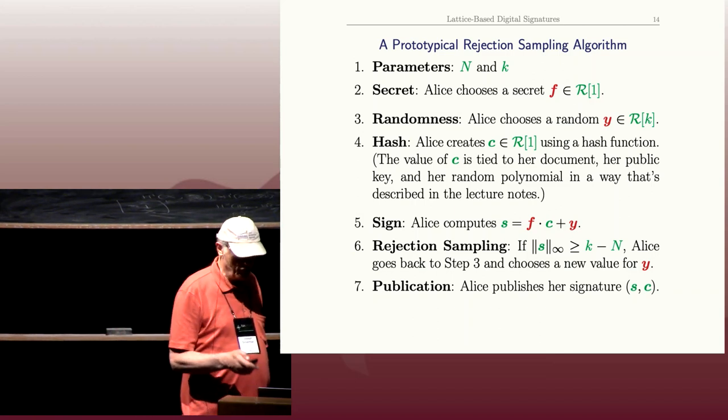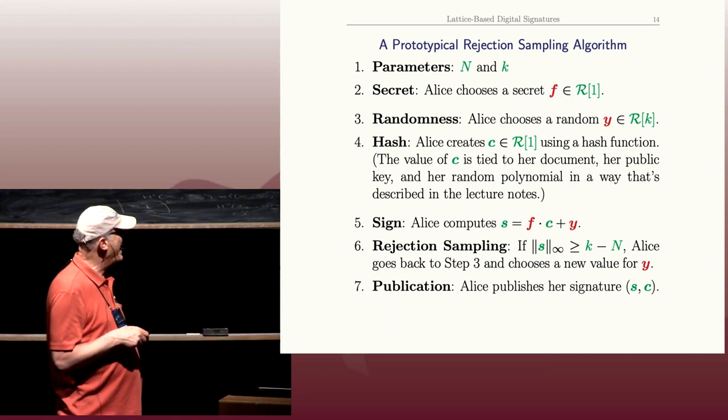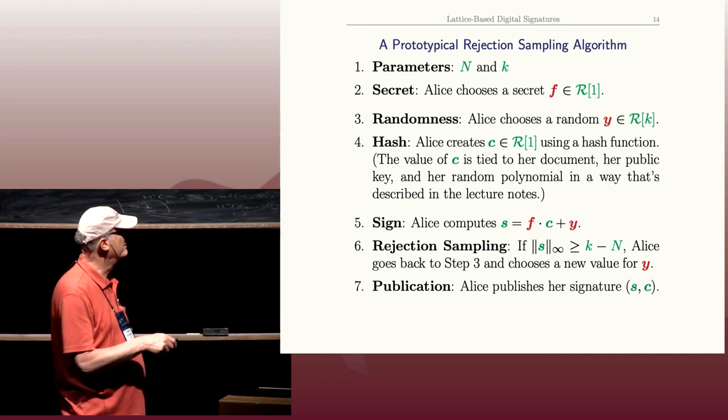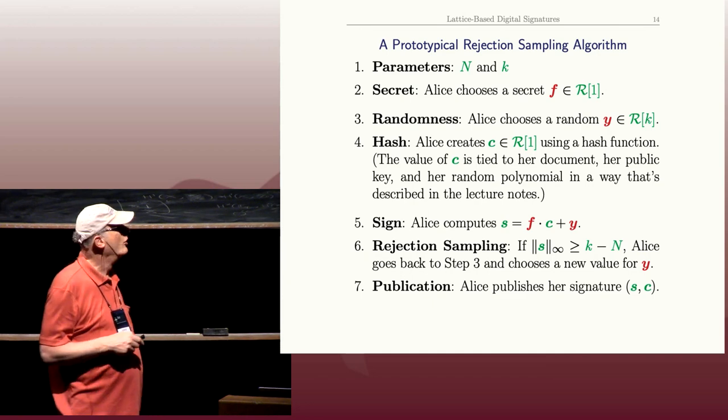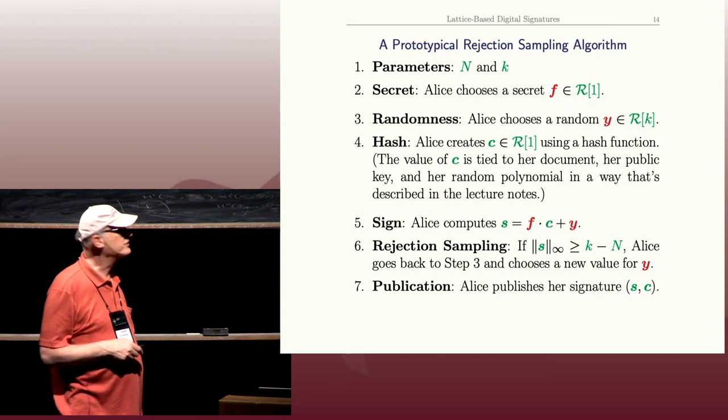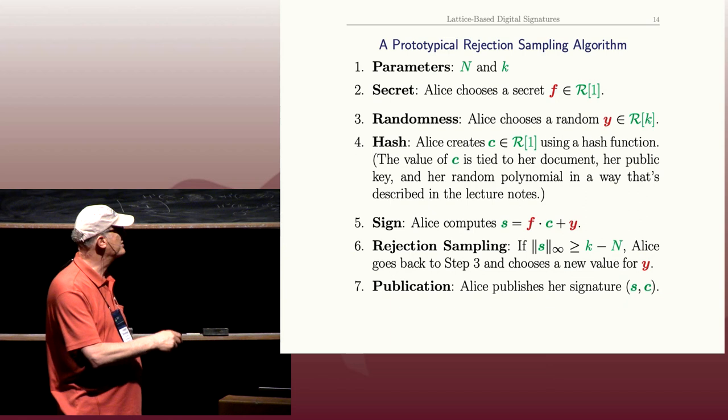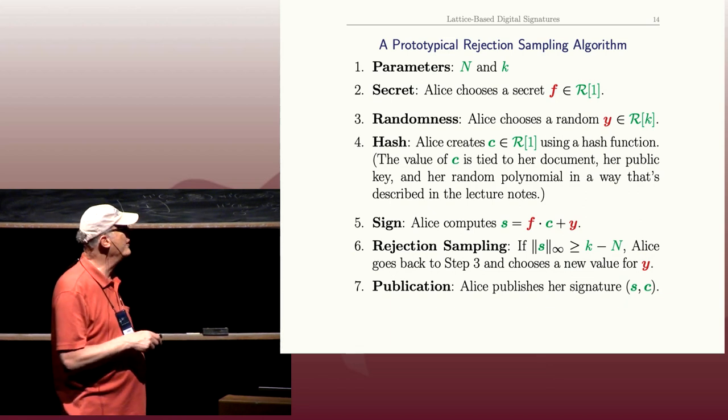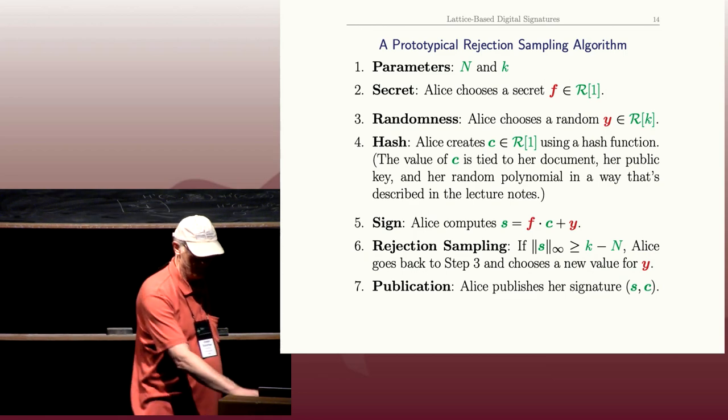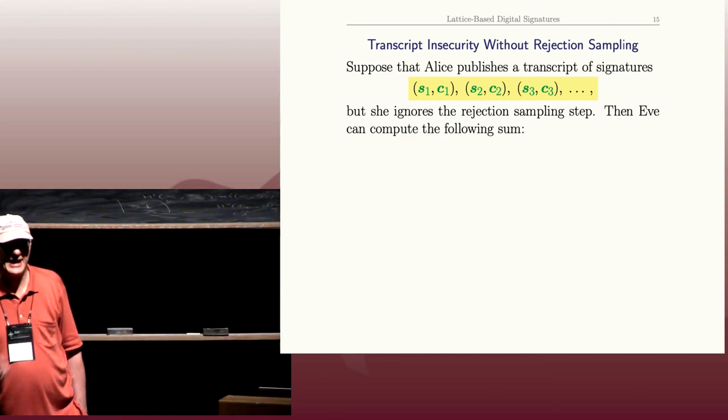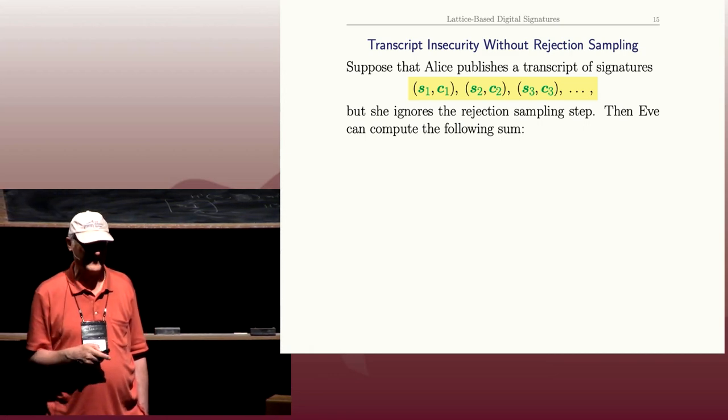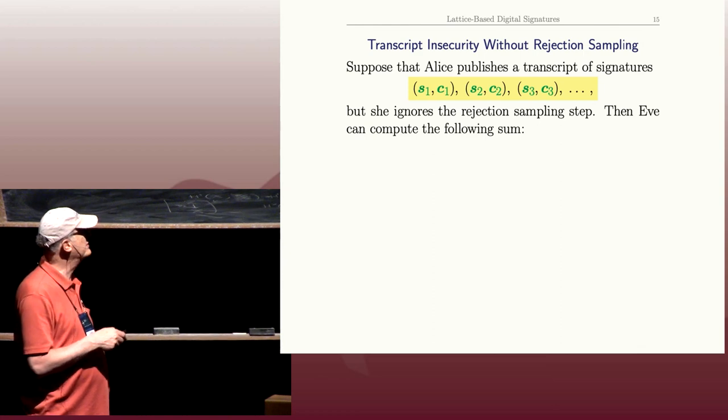I want to do two things for you. I want to show you first that if Alice skips the rejection step and just at step five she publishes s and she publishes a bunch of these signatures, then that's bad. You actually can recover her private key from that list of signatures. Then I'm going to show you that if she does include the rejection sampling step, the transcript contains no information about the private key. So usually you're trying to prove transcript security. I'm going to prove transcript insecurity.